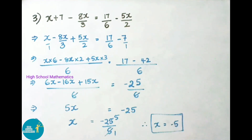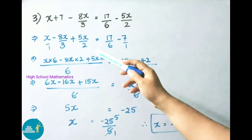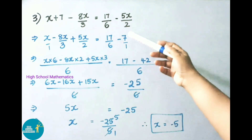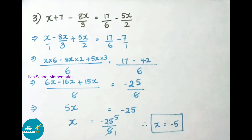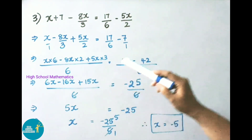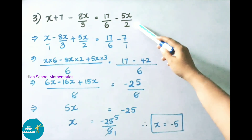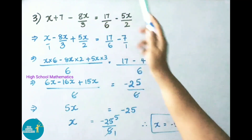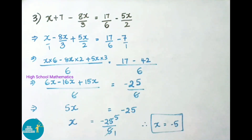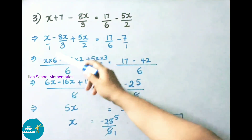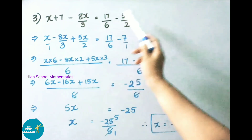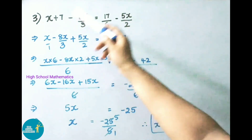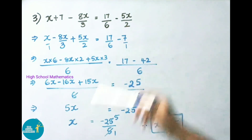Question number 3: x + 7 - 8x/3 = 17/6 - 5x/2. Transposing -5x/2 becomes +5x/2 on the left, and +7 becomes -7 on the right. So: x - 8x/3 + 5x/2 = 17/6 - 7.